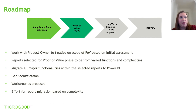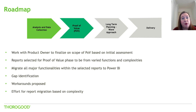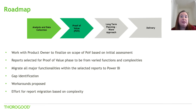Depending on the scale, it may be recommended to do a proof of value. Pick a subset of reports — some simple, some more complex — and look at what effort is actually required to migrate those reports to Power BI. See if there are any noticeable gaps and, if so, what the recommended workarounds would be. Based on that, you can produce an estimate for your remaining set of reports and start to prioritize them.